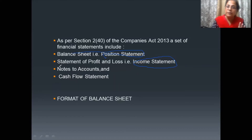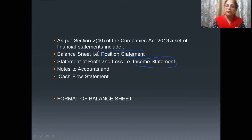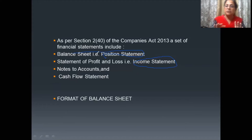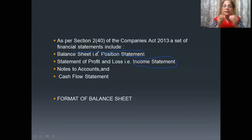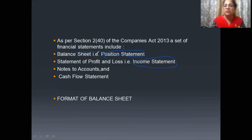Notes to Accounts is basically a summary of all amounts written in the balance sheet. In the balance sheet, the first item we write is 'Share Capital' — only the word 'Share Capital' appears in the balance sheet. But we all know share capital means equity shares and preference shares, so we write only the total of equity and preference shares in the balance sheet, and the remaining detailed breakdown we show in Notes to Accounts.